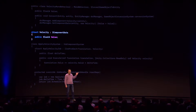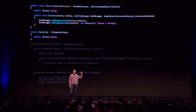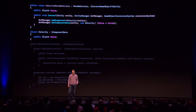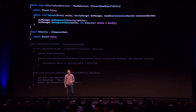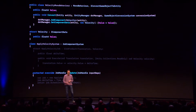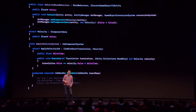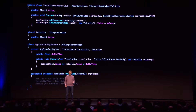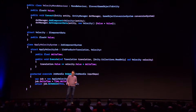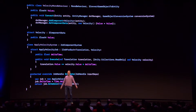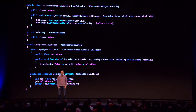You make a component, but to use it in the editor, you have to make this authoring component. To make it do something, you need to make a system. To make it do that fast, you need to make a job. And then to run the job, you need to schedule that job. So you could say, well, that sounds like a lot of work to move something around.